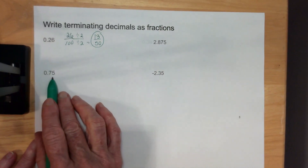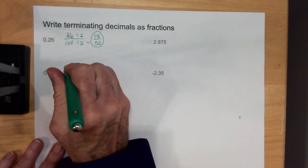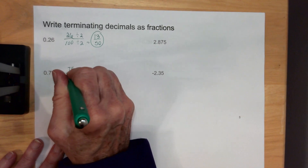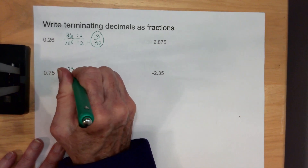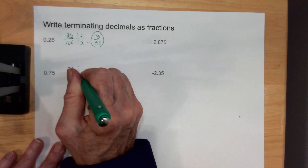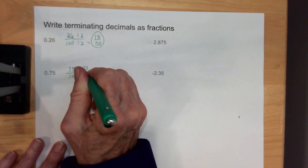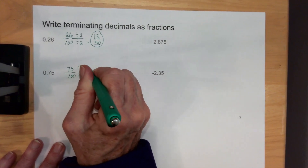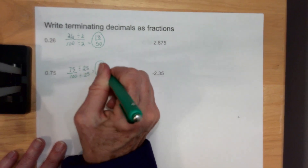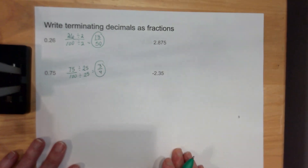Down here if I have 0.75, the 5 is in the hundredths location. So I'm going to take the 75 and place it over 100. I'm going to divide the top and the bottom by 25, and it's going to give me 3 over 4. That is the fraction for 0.75.